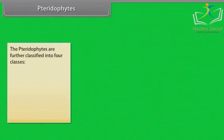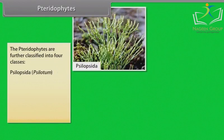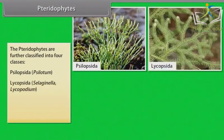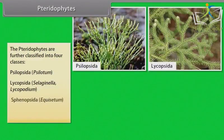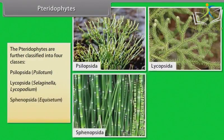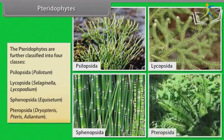The pteridophytes are further classified into four classes: Psilopsida (Psilotum), Lycopsida (Selaginella, Lycopodium), Sphenopsida (Equisetum), and Pteropsida (Dryopteris, Pteris, Adiantum).